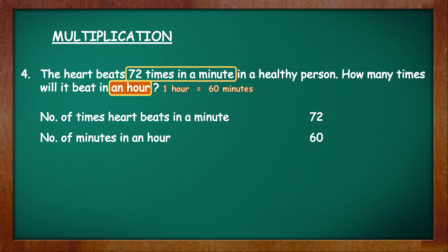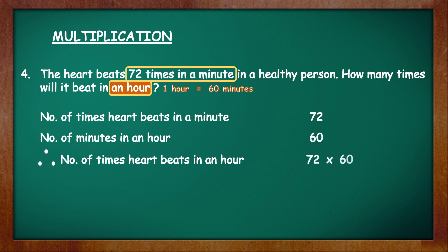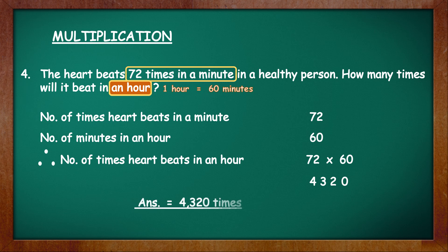After this, we can calculate the answer. Write the statement: therefore, number of times heart beats in an hour. And to find that, write the numbers that have to be multiplied: 72 into 60. Here we can use our knowledge of multiplication by multiples of 10, as 60 is a multiple of 10. Write 0 and then multiply: 72 into 6 is equal to 432. The answer is 4320. Write the answer with the unit: 4320 times the heart beats in an hour.